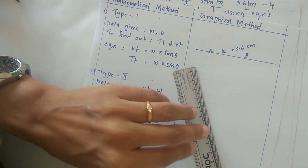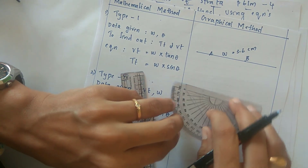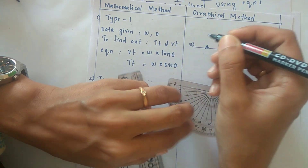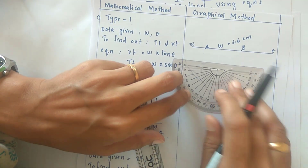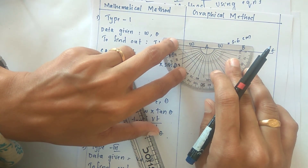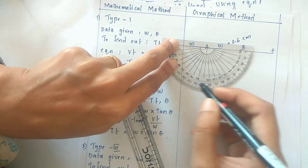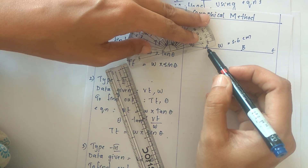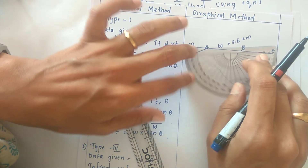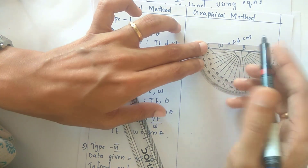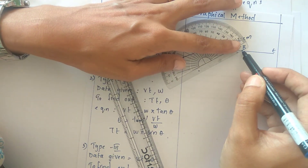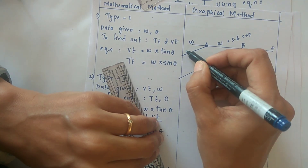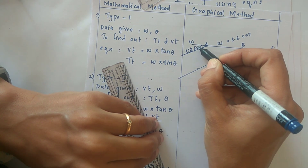Now take the protractor and give the inclination with respect to the geographic direction. Here you have east and west; in the question it is given as towards west. Keep the protractor on point A first and take 30 degrees through the line. At point B also, take the same 30 degrees. You can then identify that this is your lower bedding plane and this is the upper bedding plane, and the angle of inclination is 30 degrees.